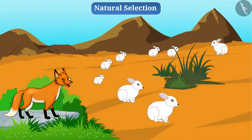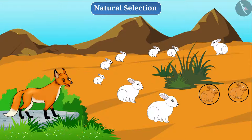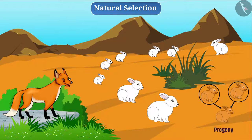We know that sexual reproduction produces variations in the population of all organisms. Suppose there is an occurrence of colour variation during reproduction of white rabbits. Due to this, brown rabbits also appear in the population. Brown rabbits will give their brown colour to their progeny, so the colour of all their offspring will be brown.